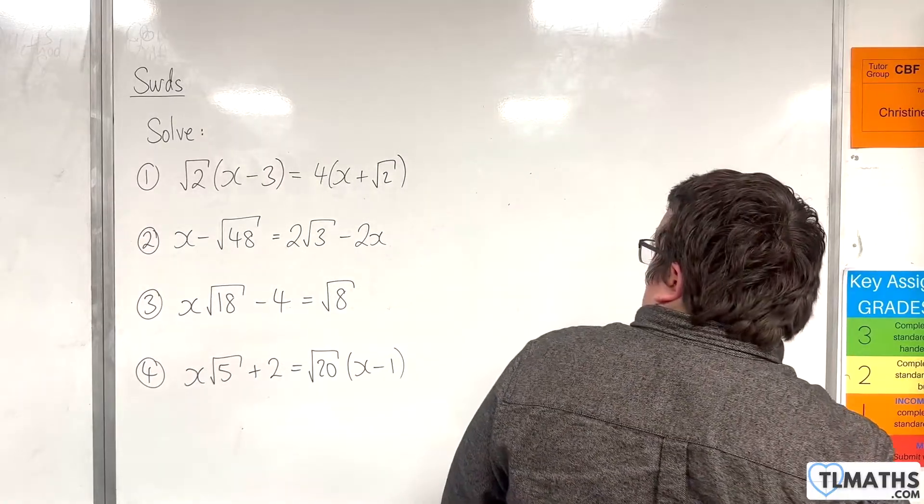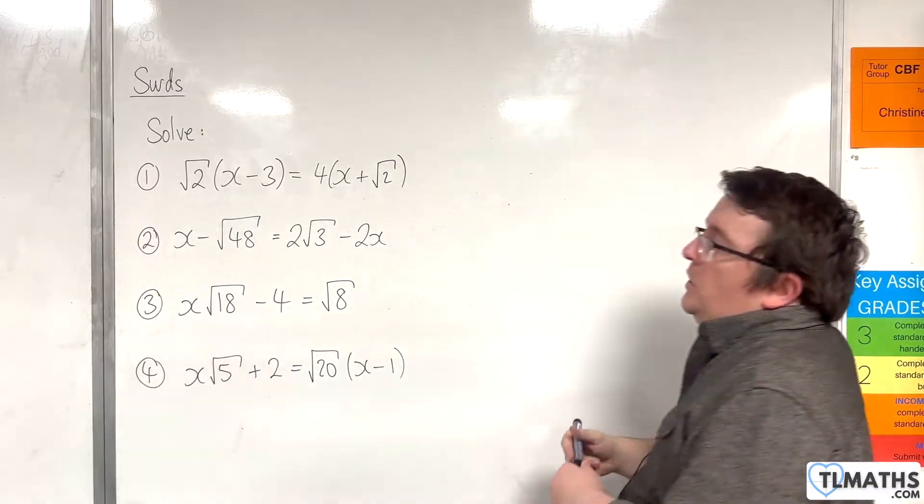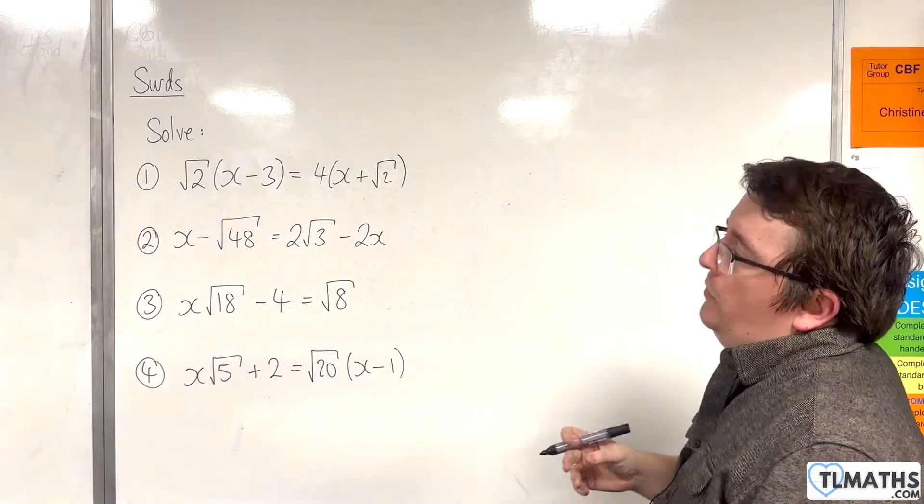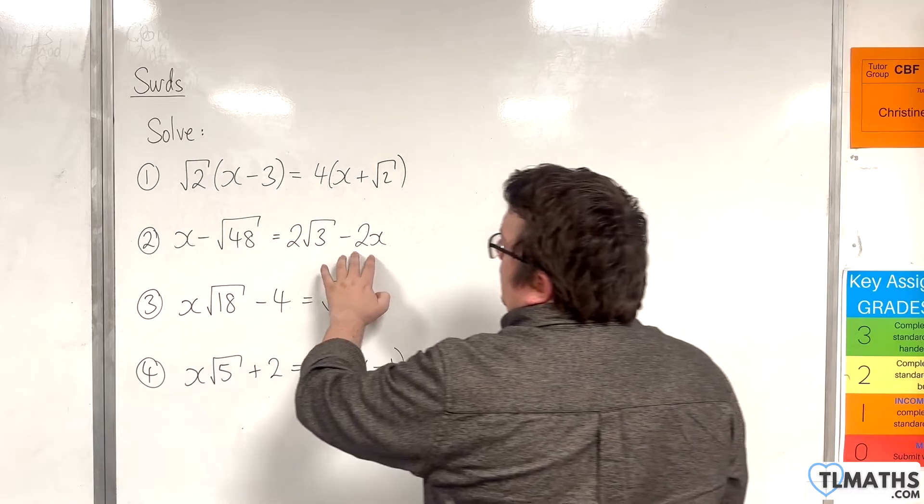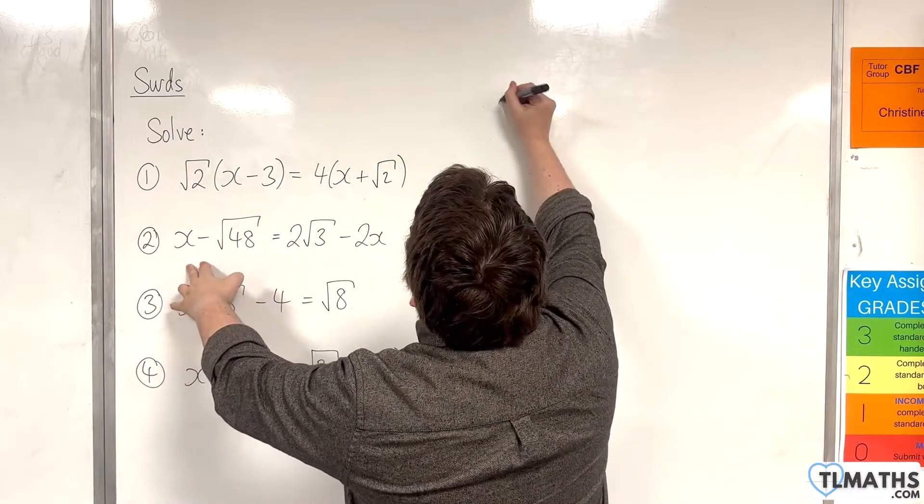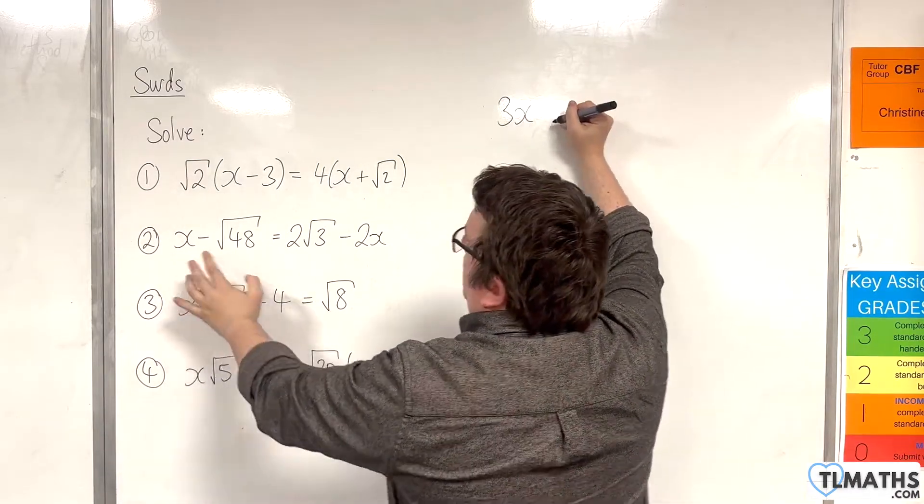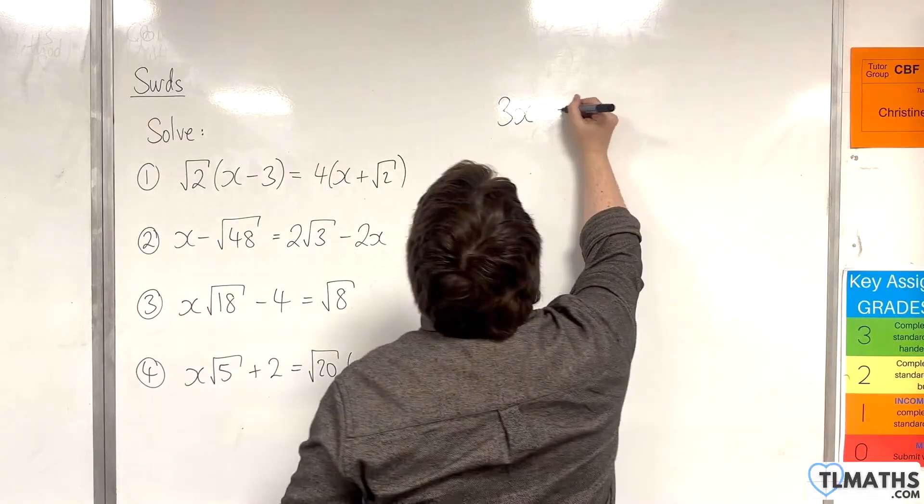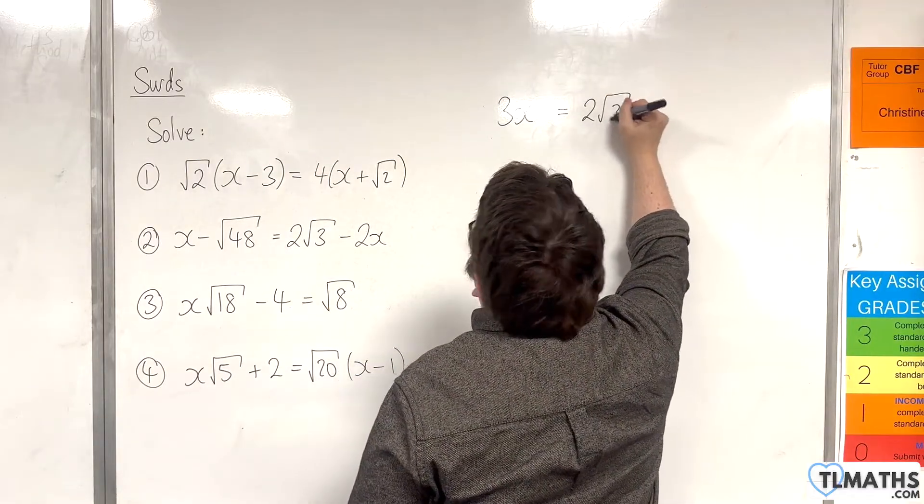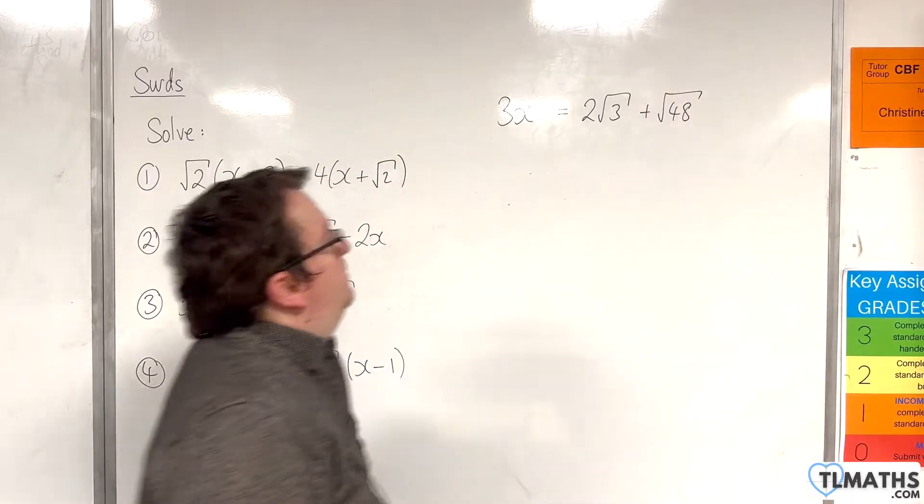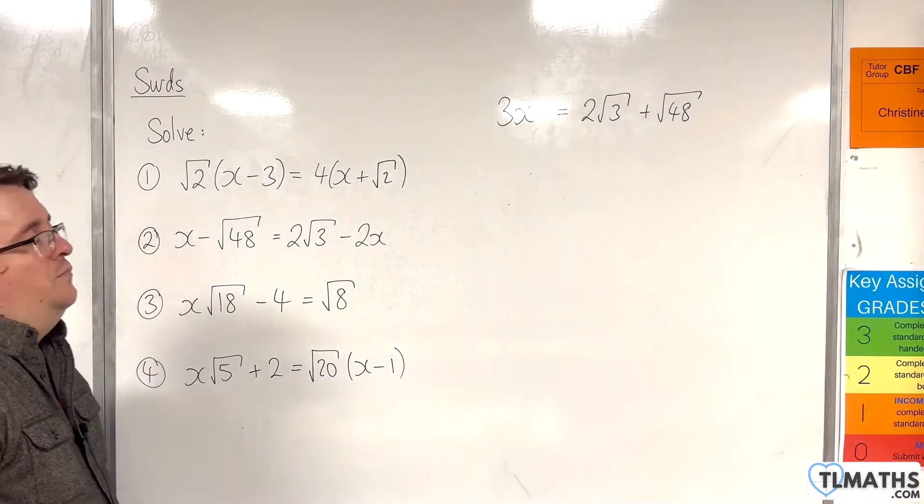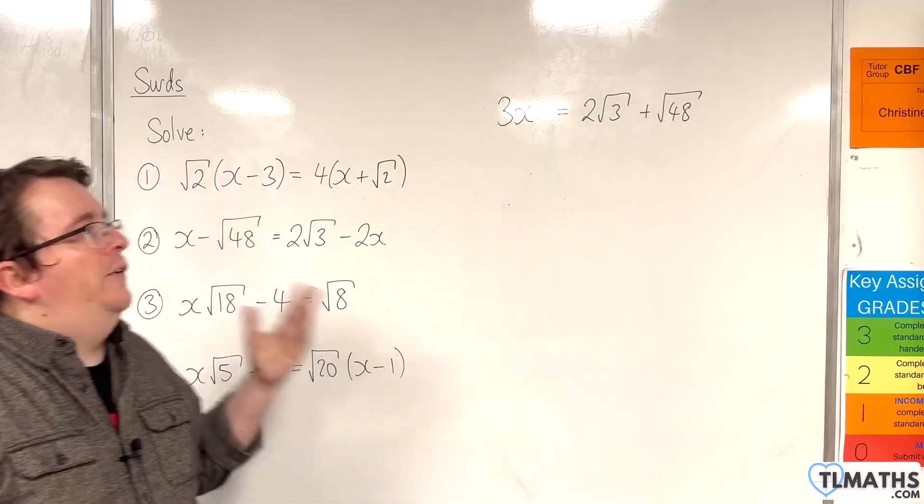Okay, number 2. x take away root 48 is equal to 2 root 3 take away 2x. So first of all I'm going to add 2x to both sides, so we'll have 3x. And I'll add root 48 to both sides as well. So 2 root 3 plus root 48. Now, from there, it's quite a simple one, but I want to simplify the surds.